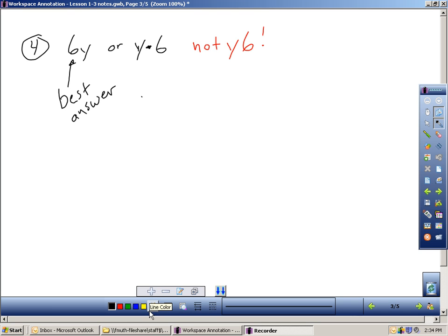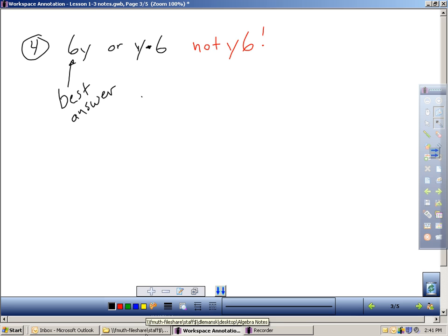So what they're going to have you practicing in the homework is taking a verbal expression or a verbal phrase and writing it as an algebraic expression. Like in number 4, it says the product of 6 and the number y. Product is multiply. They want me multiplying 6 and y. So I would recommend writing 6y. I guess if you want to put the y first, you do have to put a dot to represent multiplication, y times 6. Do not write y6. That is not an accepted form. We would never write y6. 6y is understood to mean 6 times y.